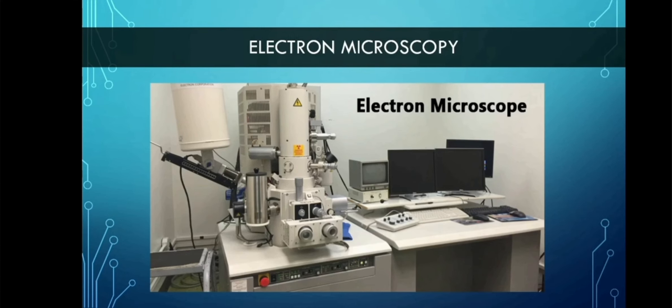Electron microscopy is a technique for obtaining high-resolution images of biological and non-biological specimens. It is used in biomedical research to investigate the detailed structure of tissues, cells, organs, and macromolecular complexes. The high-resolution of electron microscopy images results from the use of electrons, which have very short wavelength, as the source of illuminating radiation.